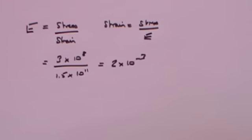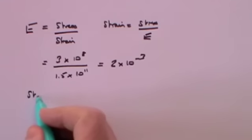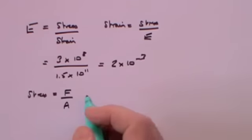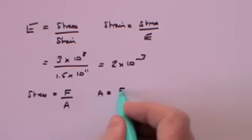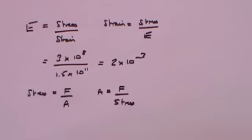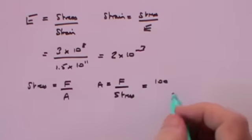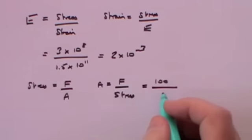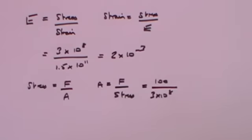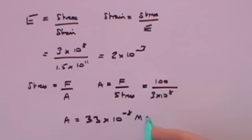The second part: if the load is 100 newtons, what is the cross-sectional area? Stress is force over area, so area equals force over stress: 100 newtons divided by 3 times 10 to the 8, giving an area of 33 times 10 to the minus 8 metres squared — that is the cross-sectional area.